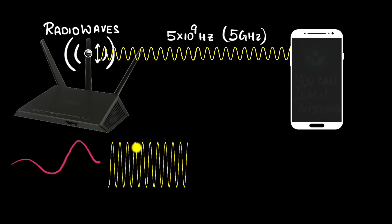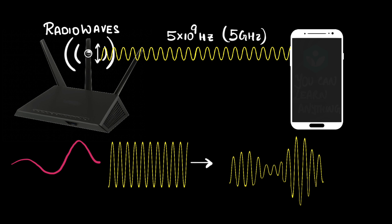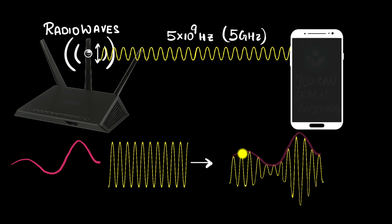One example is changing the amplitude of the radio wave according to the message signal, resulting in something like this. It looks complicated, but notice that the amplitude nicely matches the message signal. This is called modulation — specifically amplitude modulation — because the amplitude of the radio wave is changing according to the message.